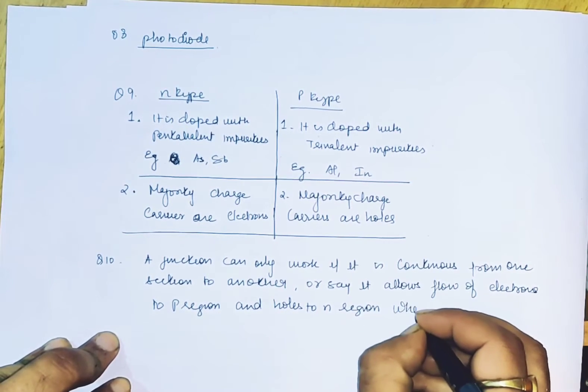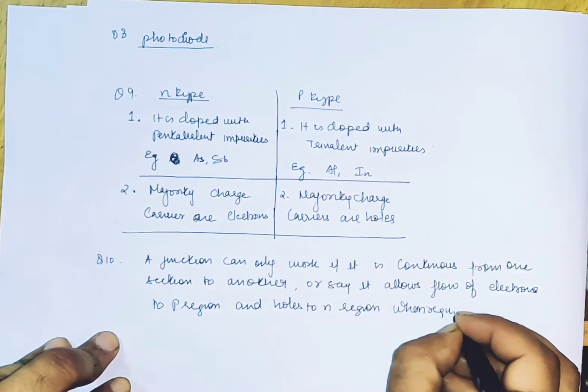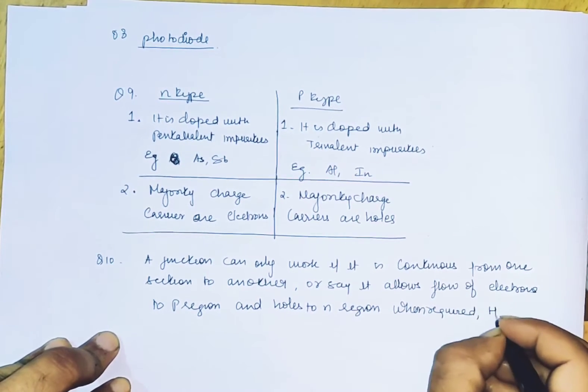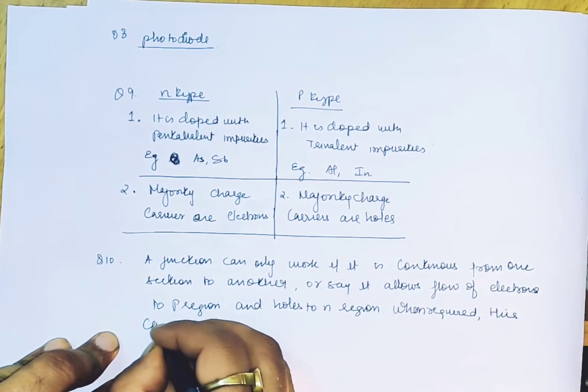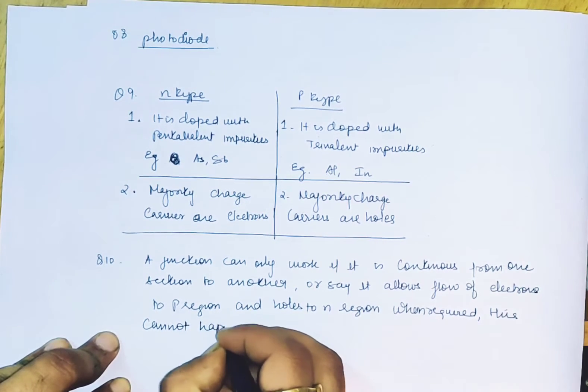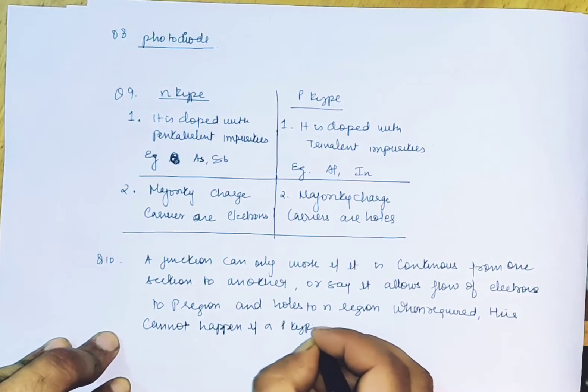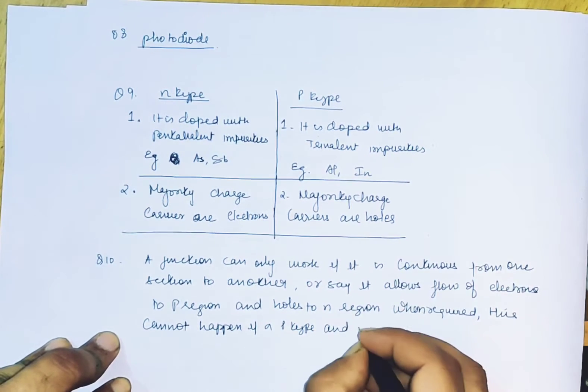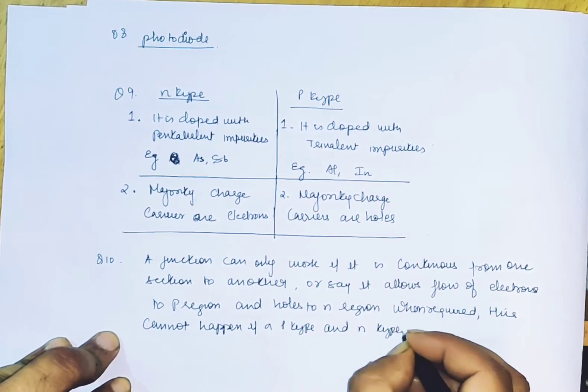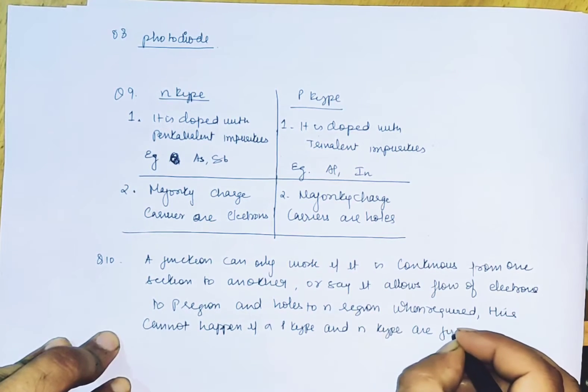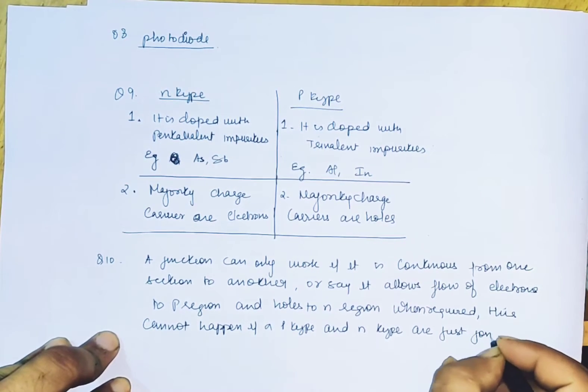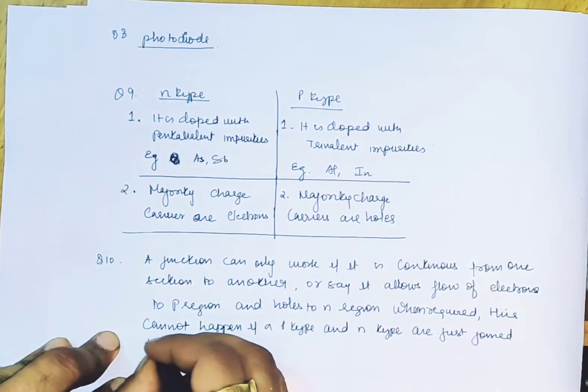When required, this cannot happen if a p-type and n-type are just joined together.